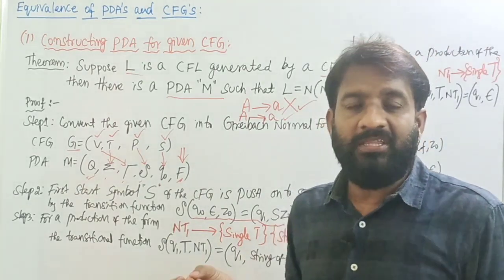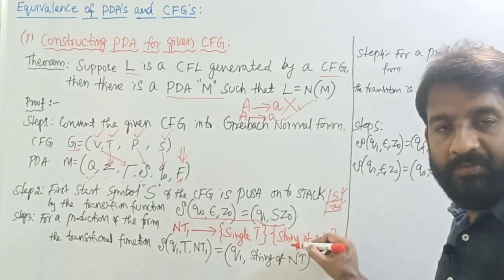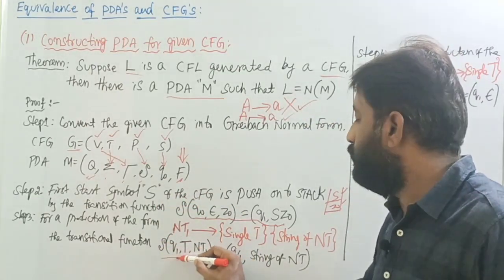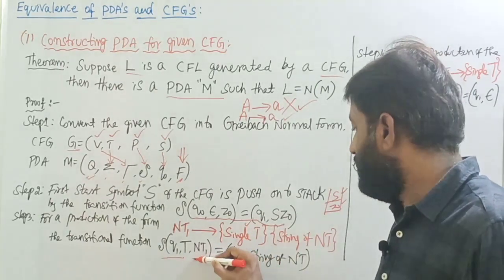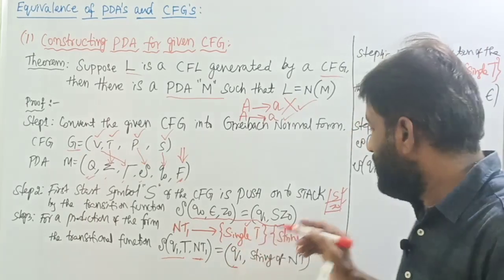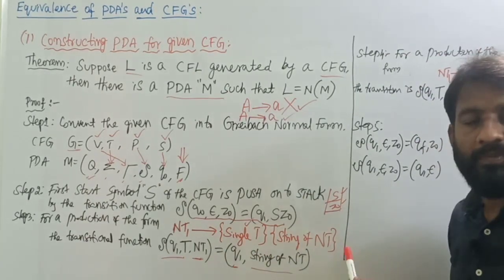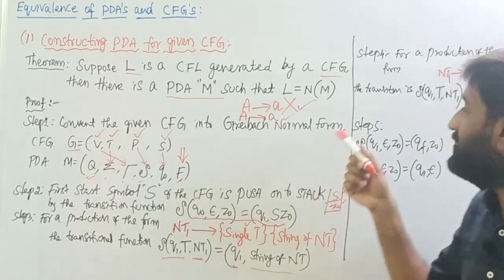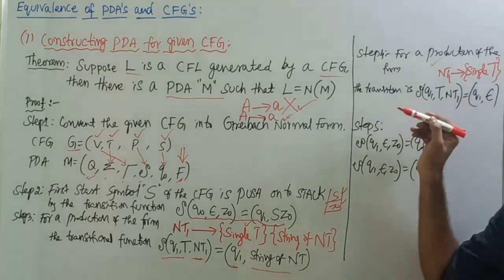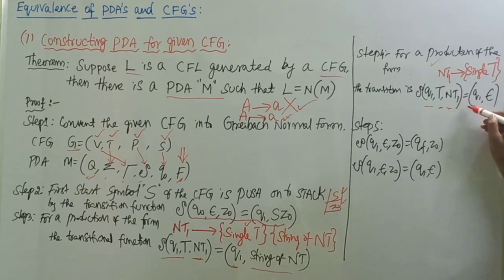Step three: take a production in Greibach Normal Form of the form NT1 → single terminal followed by a string of non-terminals. This is converted into the transition: delta(q1, terminal, NT1) = (q1, string of non-terminals), meaning we push the string of non-terminals onto the stack. Step four: for a production of the form NT1 → single terminal only, write the transition: delta(q1, terminal, NT1) = (q1, epsilon), which performs a pop operation on the stack.